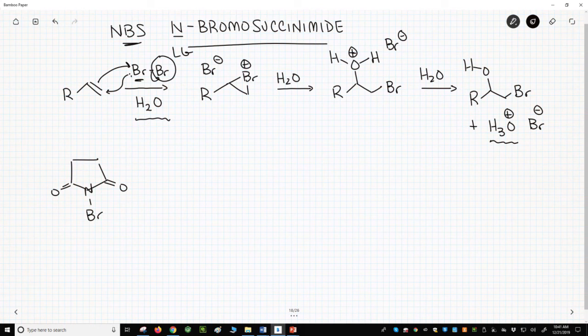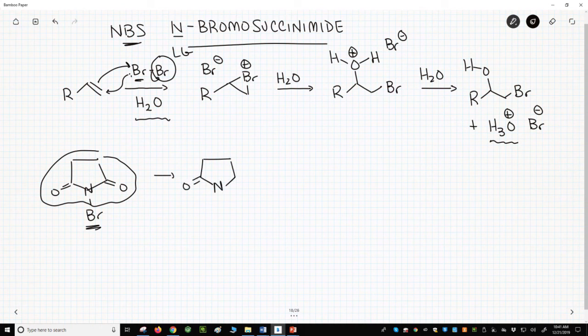NBS is very similar. We have a bromine atom attached to another group that forms a somewhat stable anion when it leaves. That leaving group is the succinimide ring. The nitrogen that leaves has lots of resonance into the adjacent carbonyls. It might not be as good a leaving group as bromide, but it's still good enough for the reaction to work well.